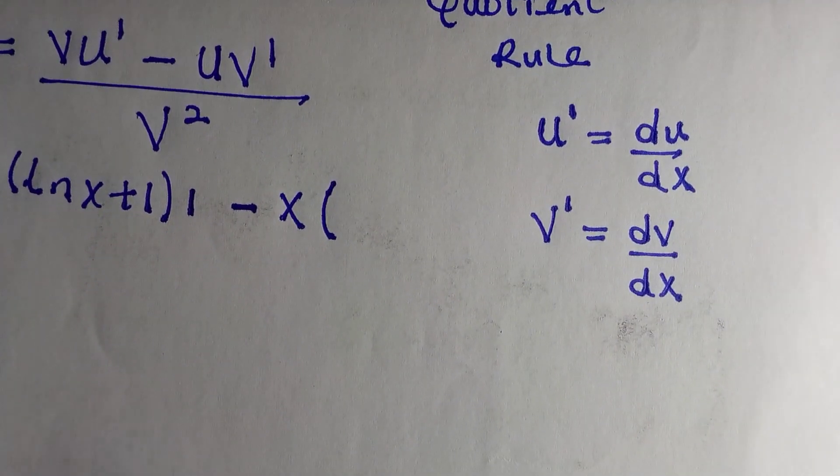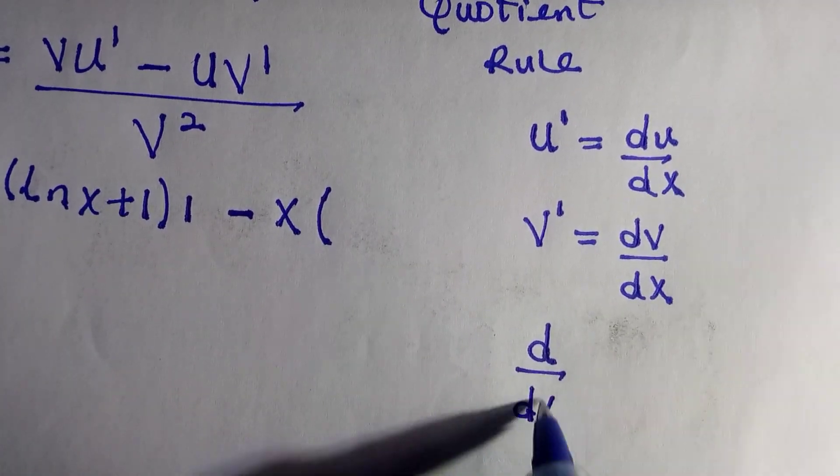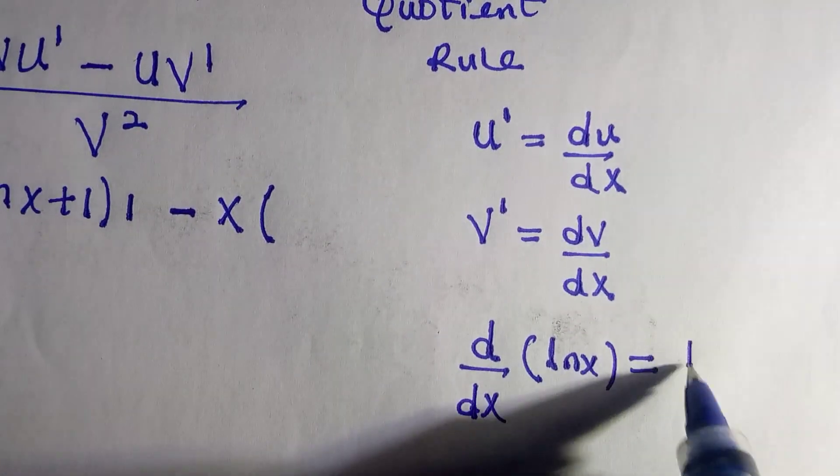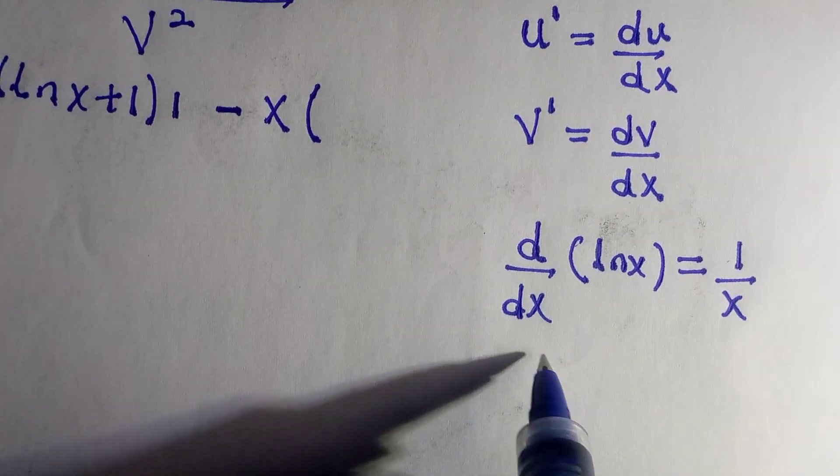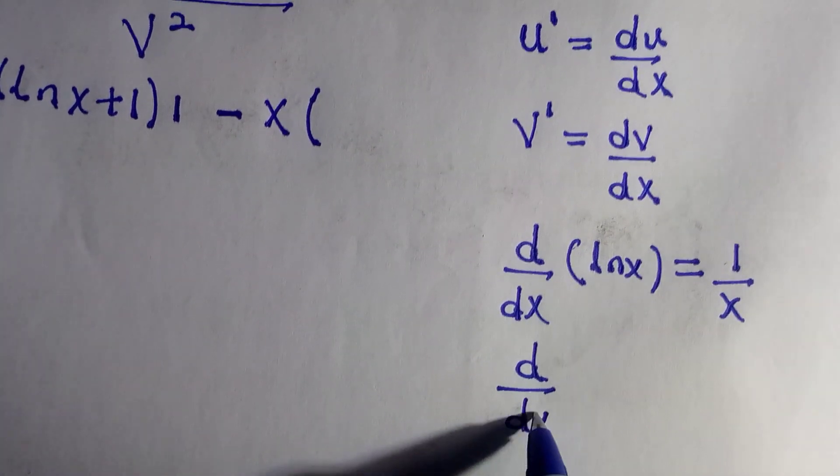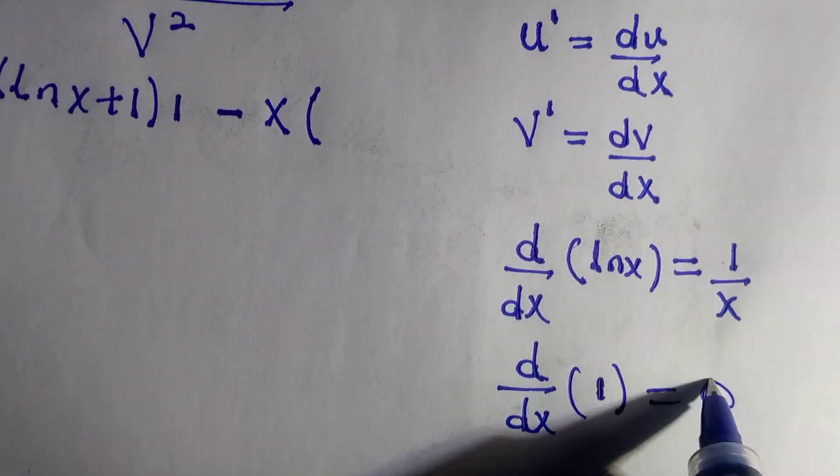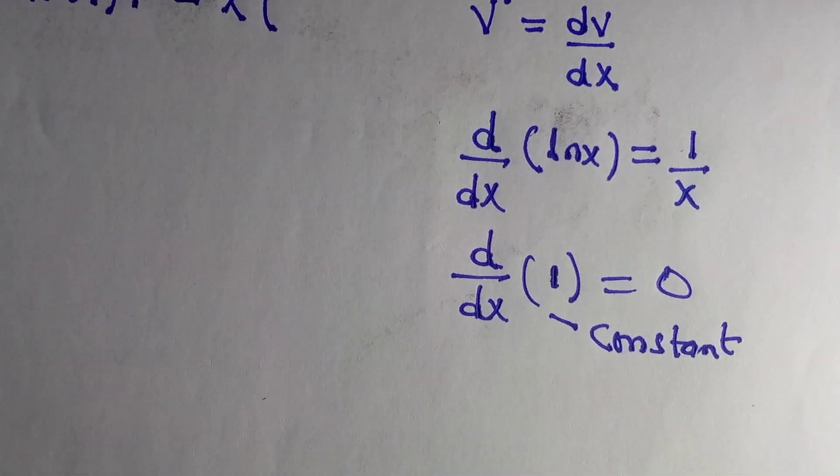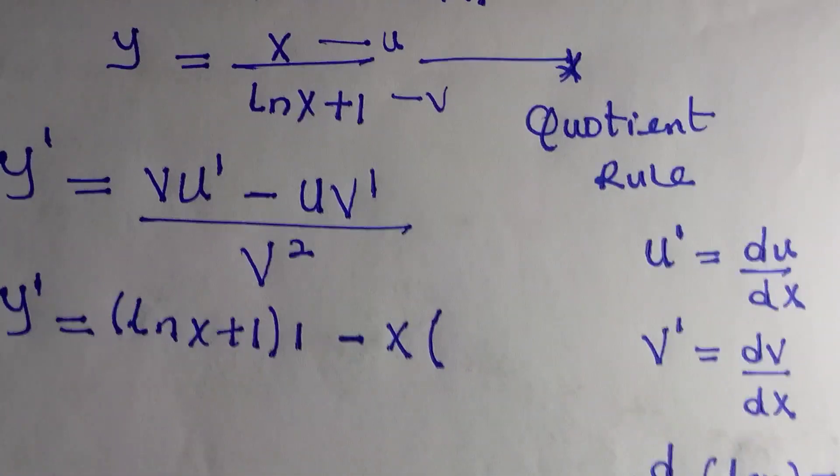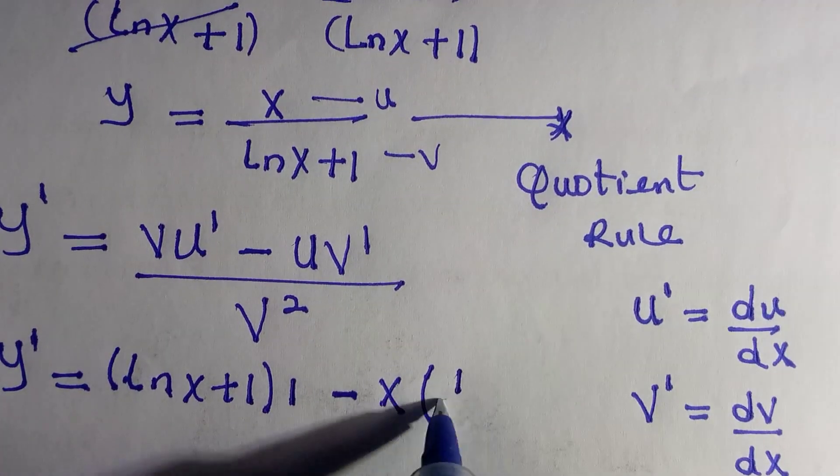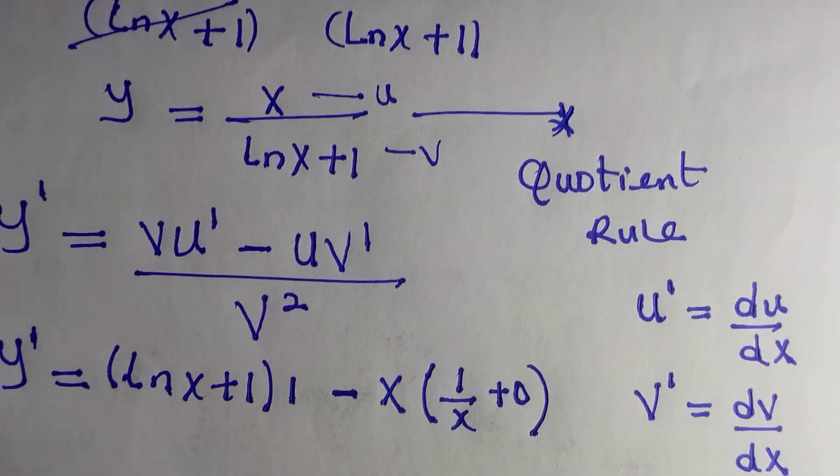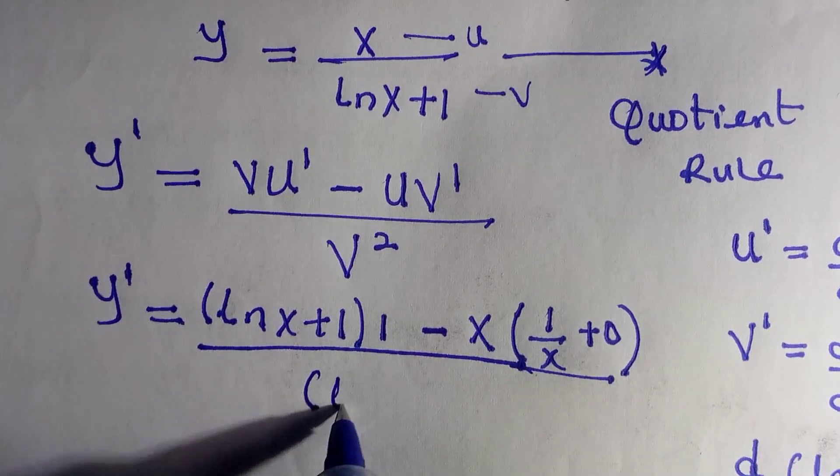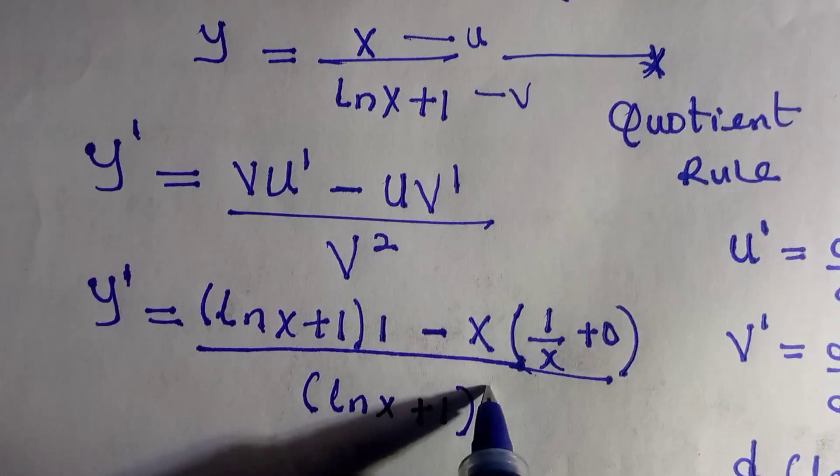If you have d/dx of ln x, this is 1 divided by x. And if you differentiate a constant value like 1, this is 0. So the derivative of any constant value is 0. So by placing it here, we have derivative of ln x is 1 over x, and for the 1 is 0, and everything divided by v which is ln x plus 1, everything to the power of 2.